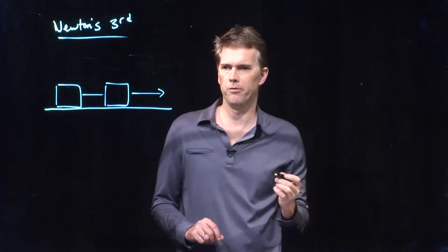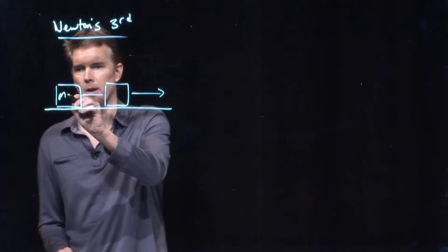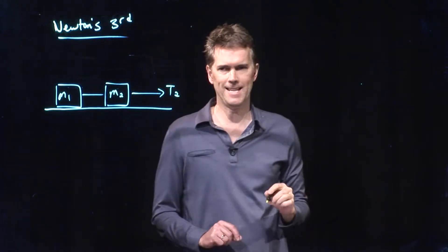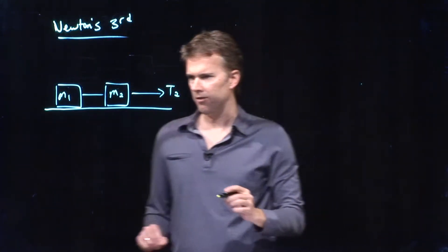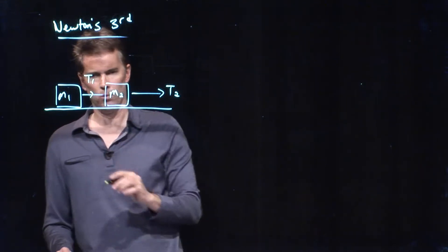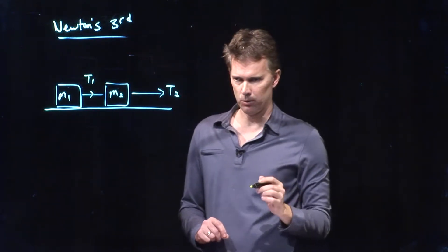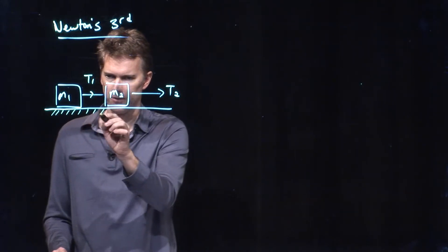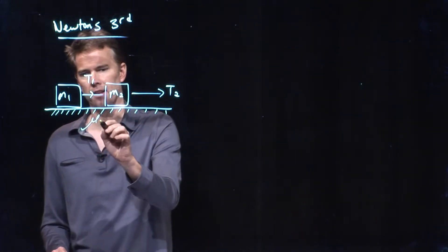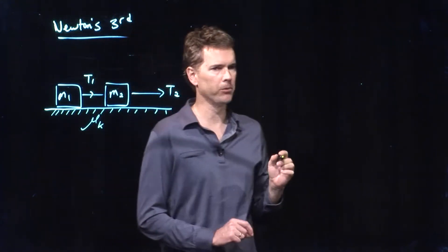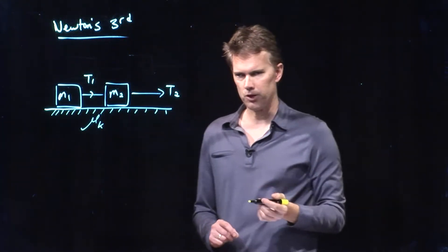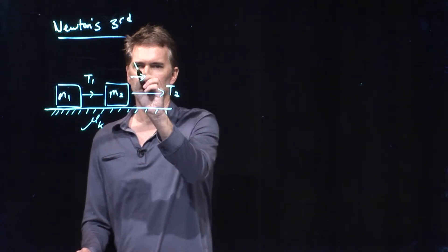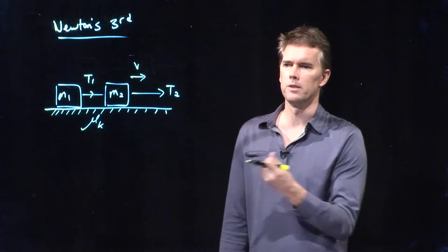So what we said before was if block one is M1, and this is M2, and we pull it with T2, let's ask the following question. What is T1 equal to, but let's also include friction. This whole thing is going to slide to the right, which means we're dealing with kinetic friction, and kinetic friction has a coefficient mu sub k. We're going to say the whole thing is moving to the right.